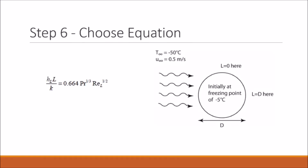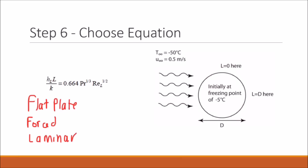We can now choose our equation. We have a flat plate with forced convection and laminar flow. Using these three conditions we can determine the appropriate equation to use, where the left side of the equation comes from our average Nusselt number. Using this equation we can now plug in our known variables and solve for Hl, which we will do in step 7.